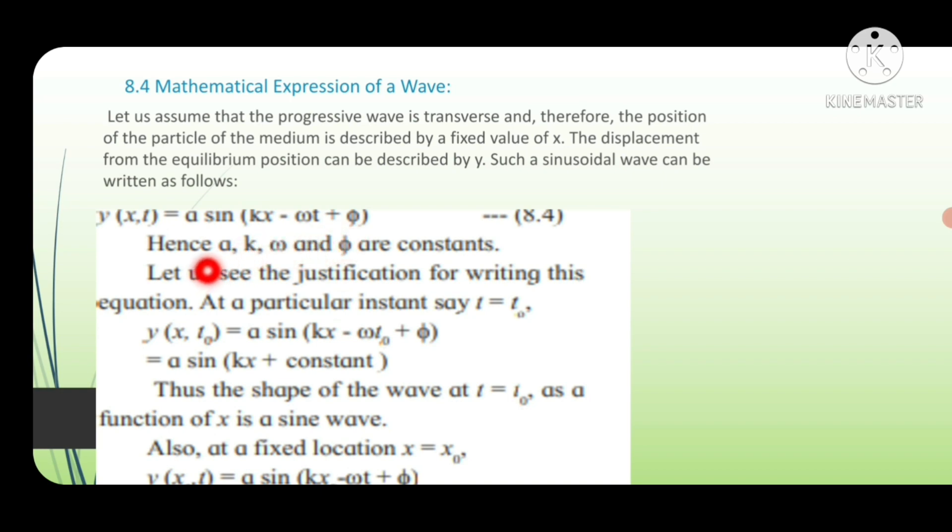Hence, a, k, ω and φ are constants. a is the amplitude of the wave. ω is the angular frequency of the wave. And k is the angular wave number.